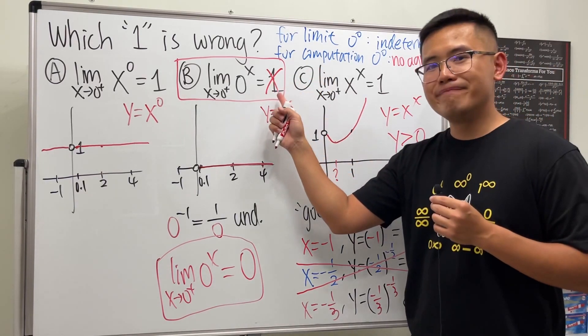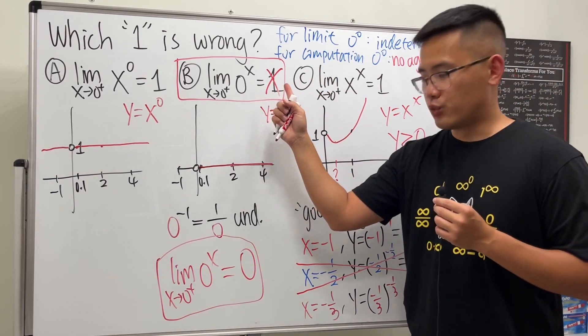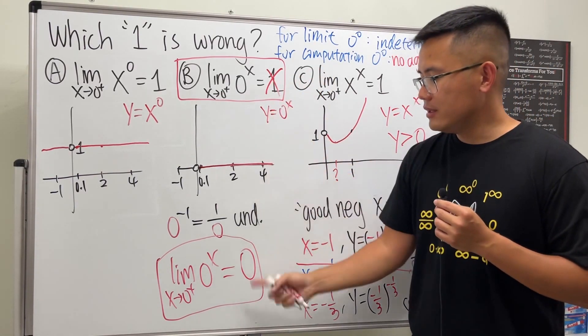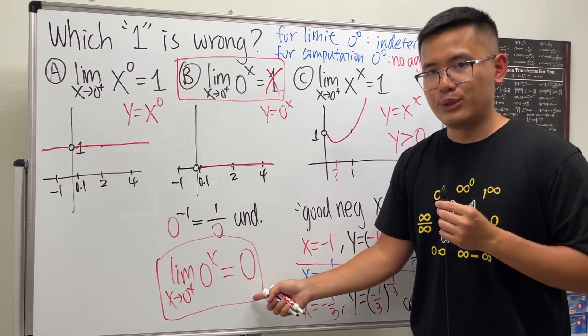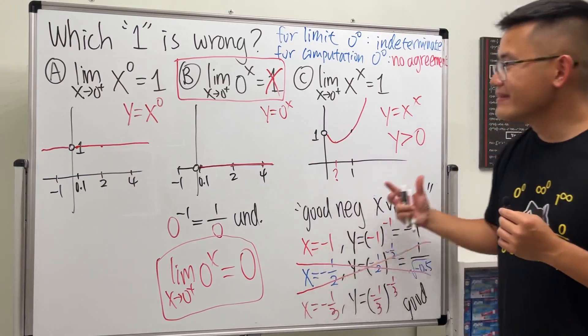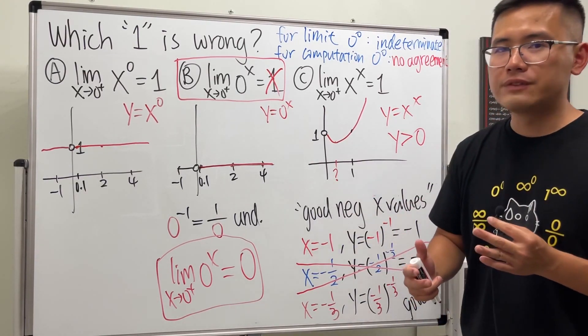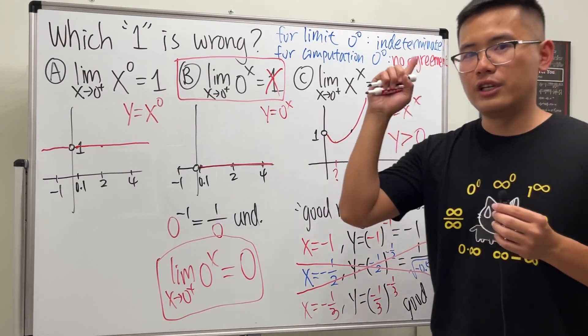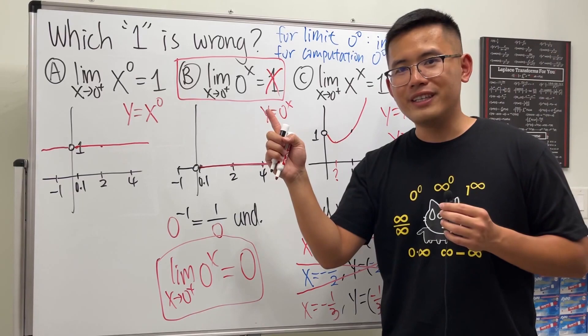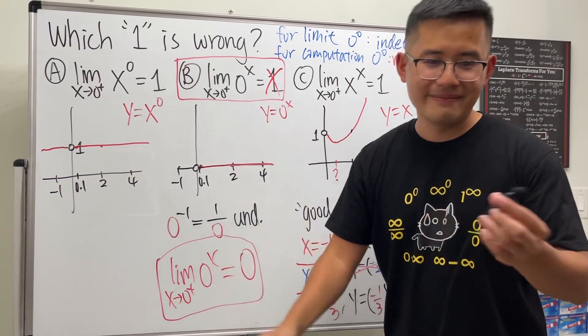So looking at these three limits, B is wrong because it should equal zero, not one. Hopefully this helps — check out my calculus playlist for more videos like this.